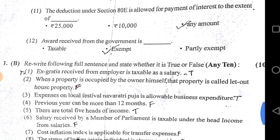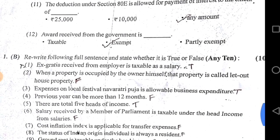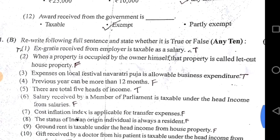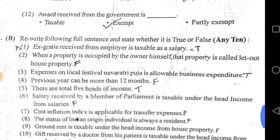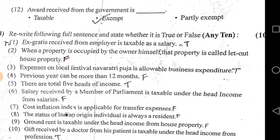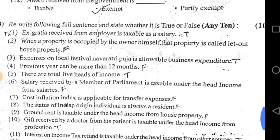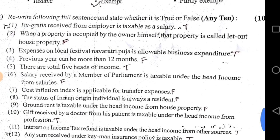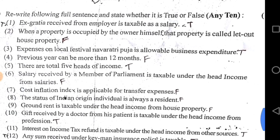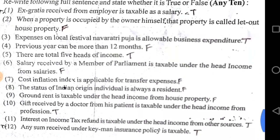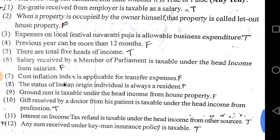Now we start with the True or False questions. Ex gratia received from the employer is taxable as salary — True. When a property is occupied by the owner himself, that property is called a let-out house property — False. Expenses on a local festival like Navratri puja are allowed as business expenditure — True. Previous year can be more than 12 months — False. There are total five heads of income — True.